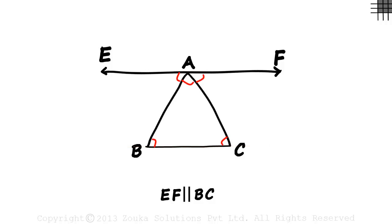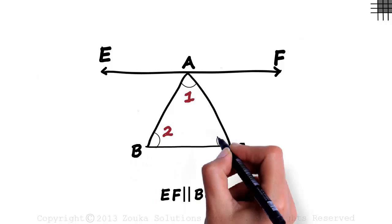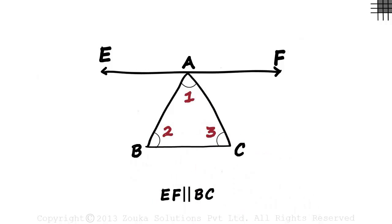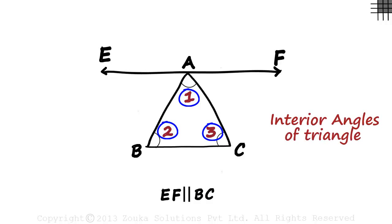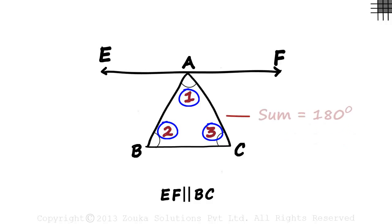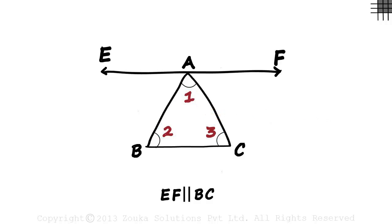You can see that many angles are formed. Let's name them. Let this be angle 1, let this be angle 2, and let this be angle 3. Angles 1, 2, and 3 are the interior angles of the triangle, and their sum equals 180 degrees. There are two more angles formed outside the triangle — let's call them angle 4 and angle 5.